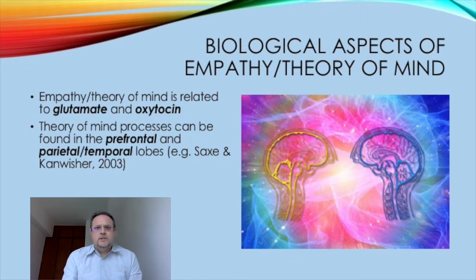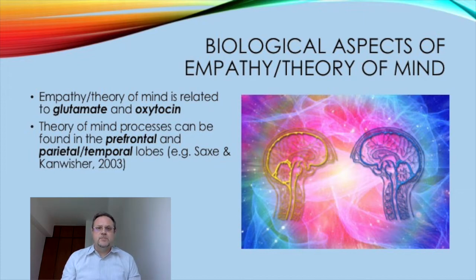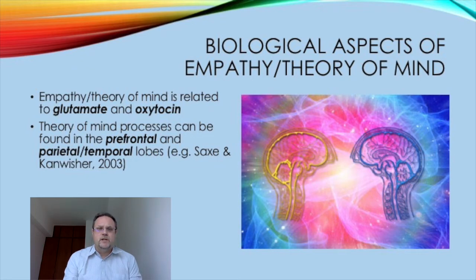A study by Sachs and Kandysher — a brain scan study — showed that the areas involved in processing social understanding are the parietal and temporal lobes, as shown here. In that study, a group of women were asked to make inferences and use their theory of mind ability by reading stories or looking at people, and they found that those areas were involved in that processing.